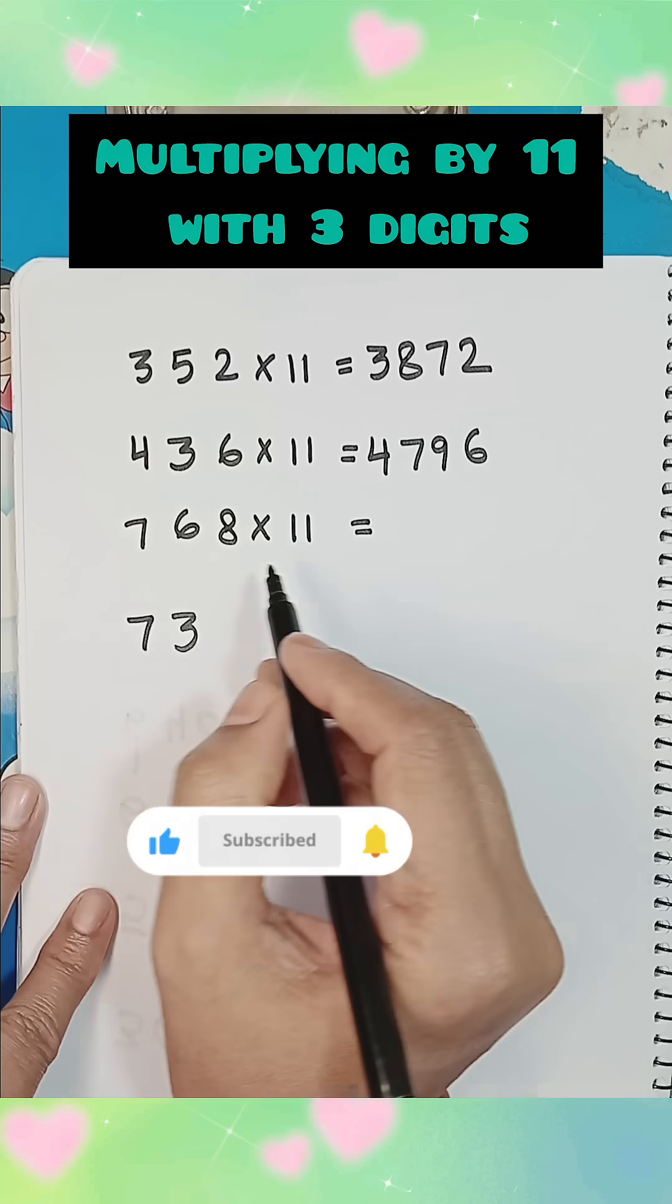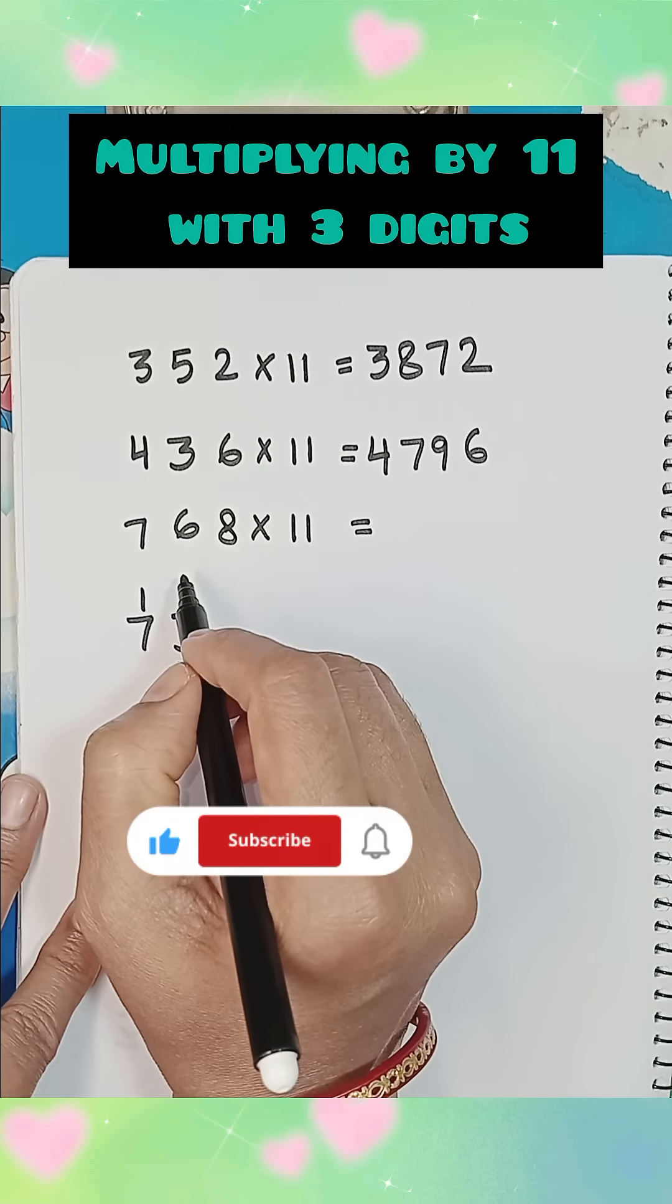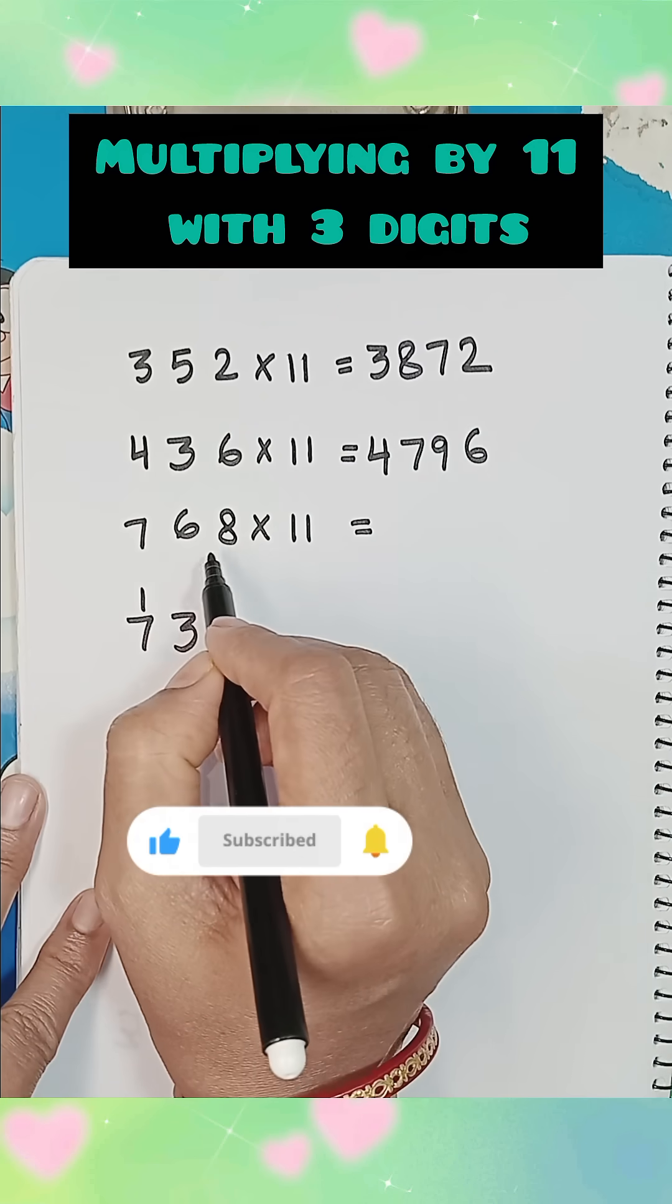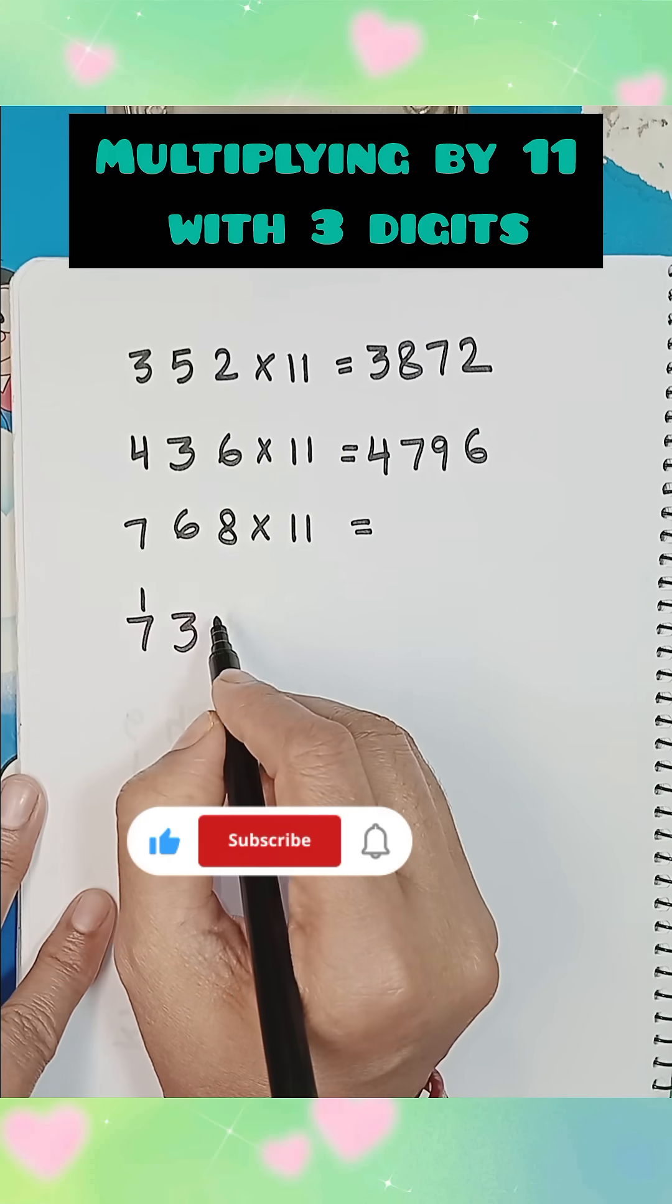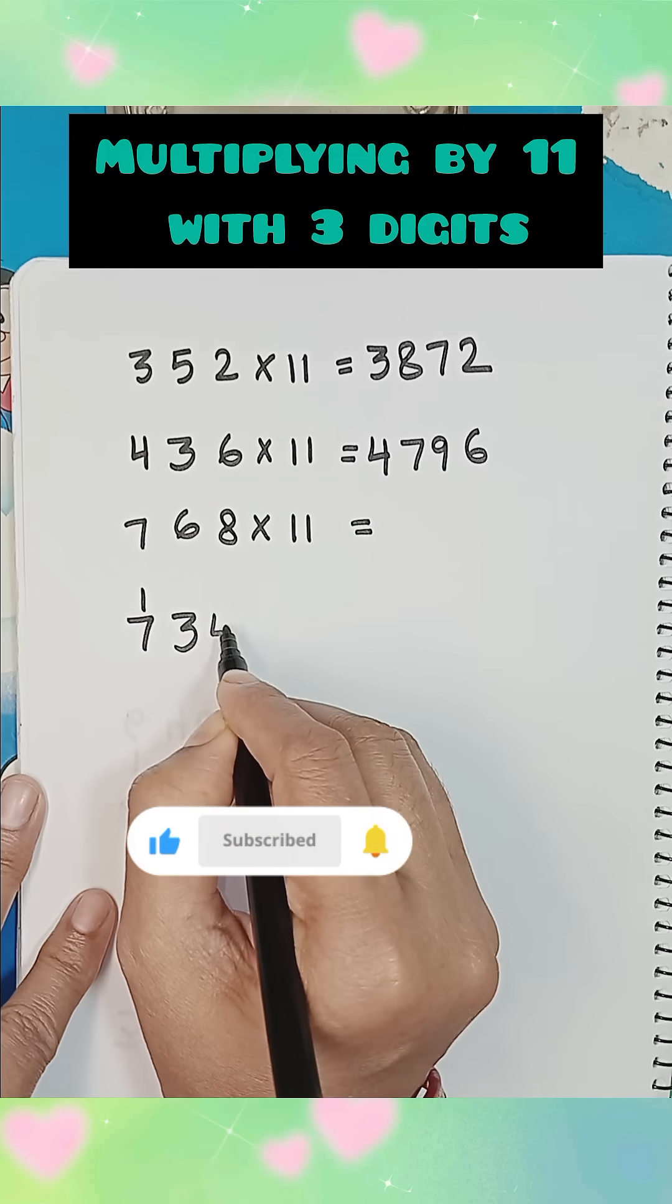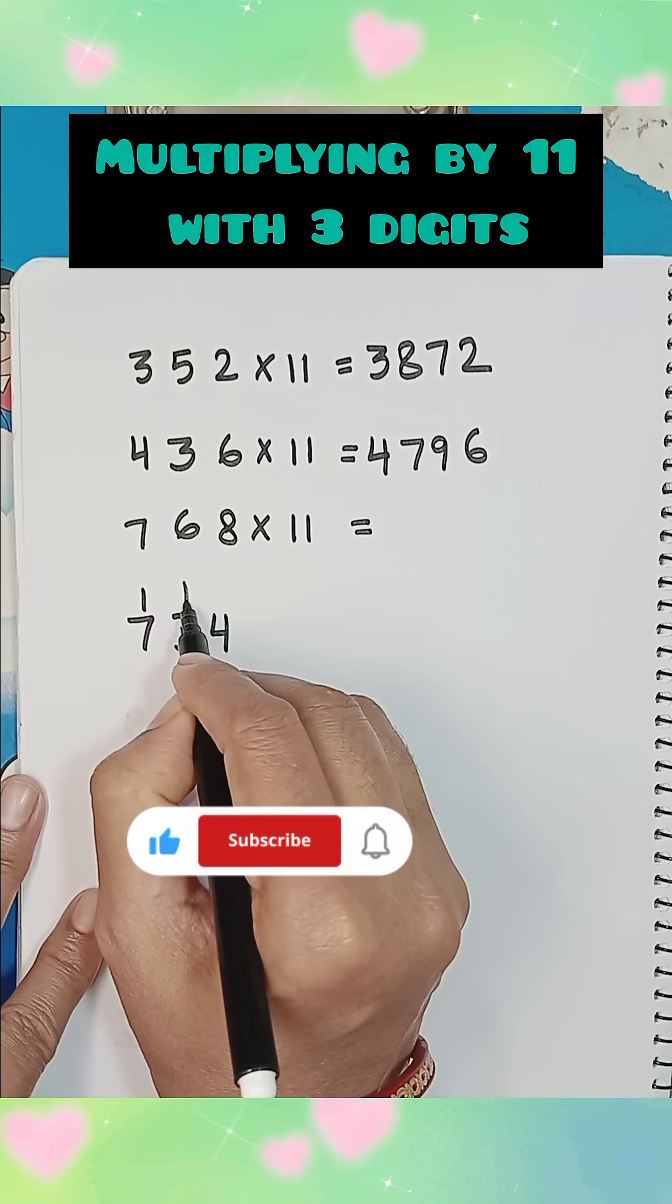Write 3 and carry 1 with 7, now add 2nd and 3rd digit, 6 plus 8 is equal to 14, write 4 and carry 1 with 3.